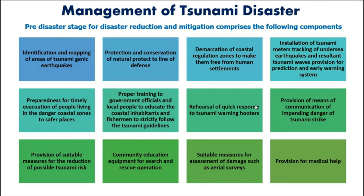In beach areas there are warning hooters, and since the second tsunami can arrive within only 20 minutes, everyone must hear and respond to these hooters quickly. Provision of communication means, suitable measures to reduce tsunami risks — like avoiding low-lying coastal areas for settlements, building protective sea walls or breakwaters — community education, search and rescue equipment, aerial survey from airplanes or helicopters, and medical help should all be in place.